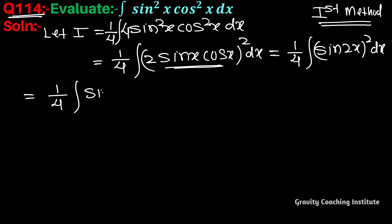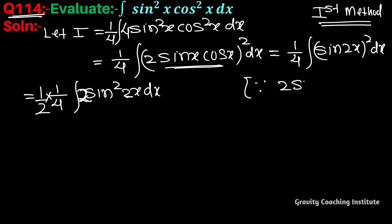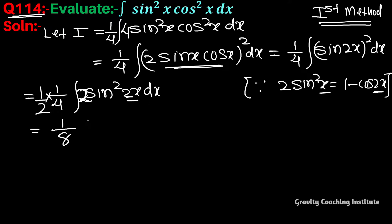This equals one by four into integration of sin 2x whole square dx, equal to one by four into integration of sin² 2x dx. Now we take a factor of 2 and balance it with one by two. We know that 2sin²x equals 1 minus cos 2x, so replacing x with 2x we get 1 minus cos 4x.